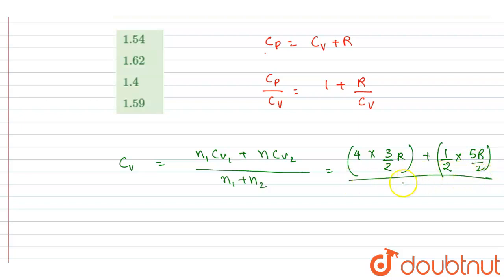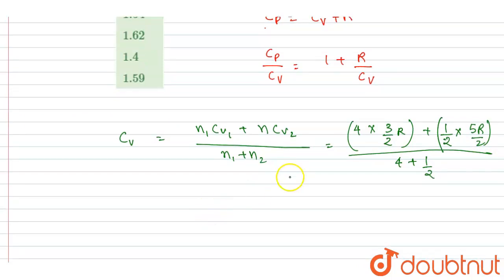So if you calculate here, the Cv you will get is 29 R by 18. You can solve it. So if you see, this is 8 by 2 plus 1 by 2, it will be 9 by 2. So after multiplying, you will get it is equal to 29 R by 18.